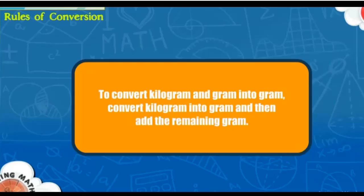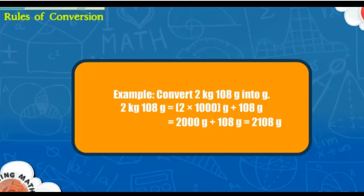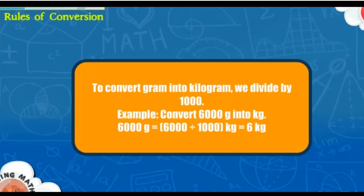To convert kilogram and gram into gram, convert the kilograms into grams and then add the remaining grams. For example, convert 2 kilograms and 108 grams into grams: 2 kg 108 g = (2 × 1000) + 108 = 2000 + 108 = 2108 grams.